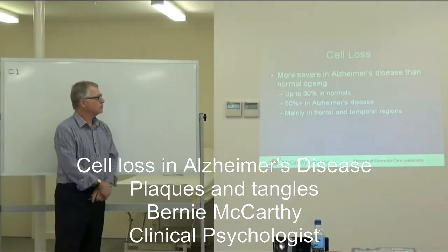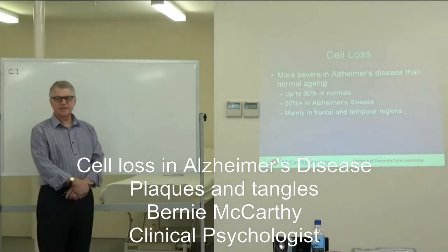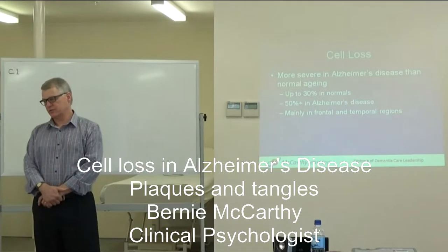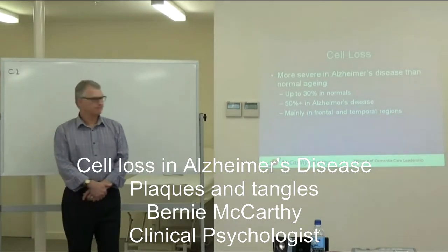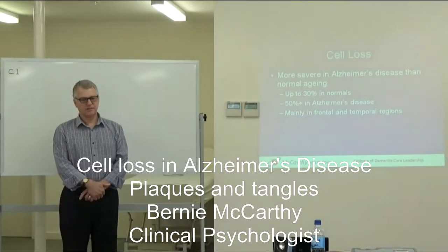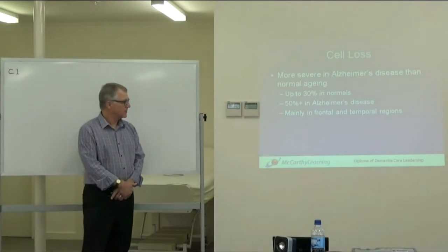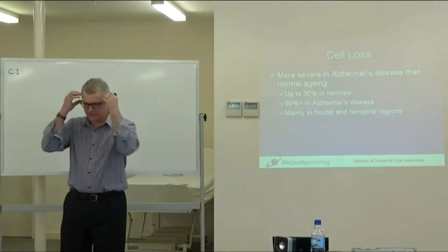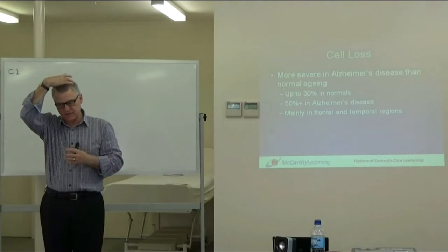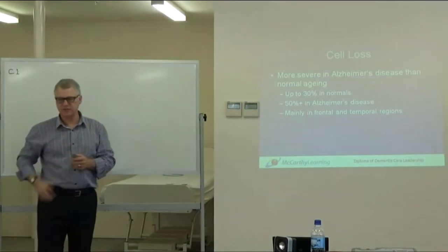Cell loss in Alzheimer's disease is more severe than normal aging. In normal aging, you will have brain cell loss of up to 30% of your brain cell volume. But in Alzheimer's disease, you will have 50% plus of brain volume lost as the person ages. It's mostly in the frontal and temporal regions, but it also affects the parietal and occipital areas to a lesser degree.